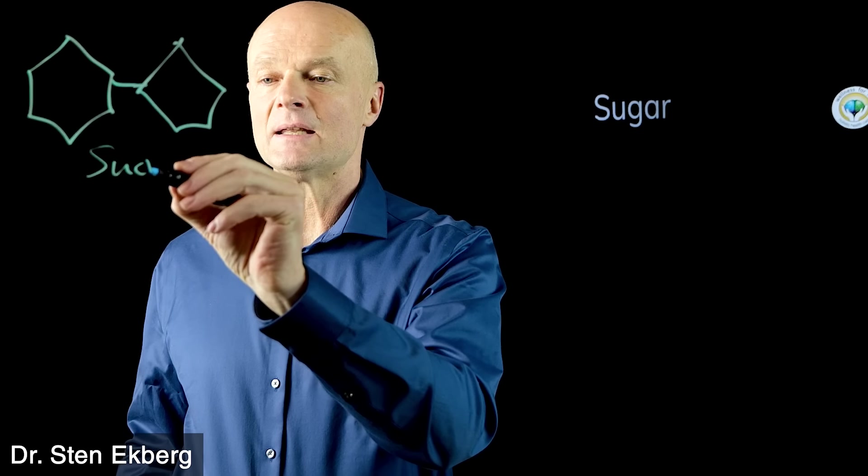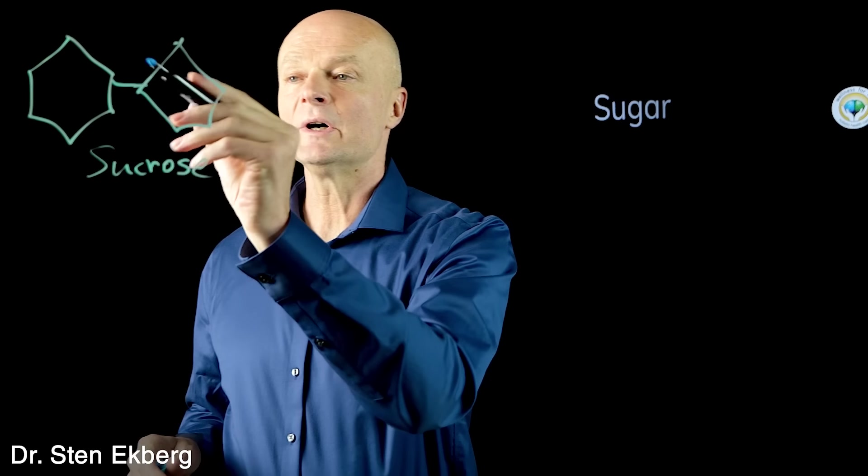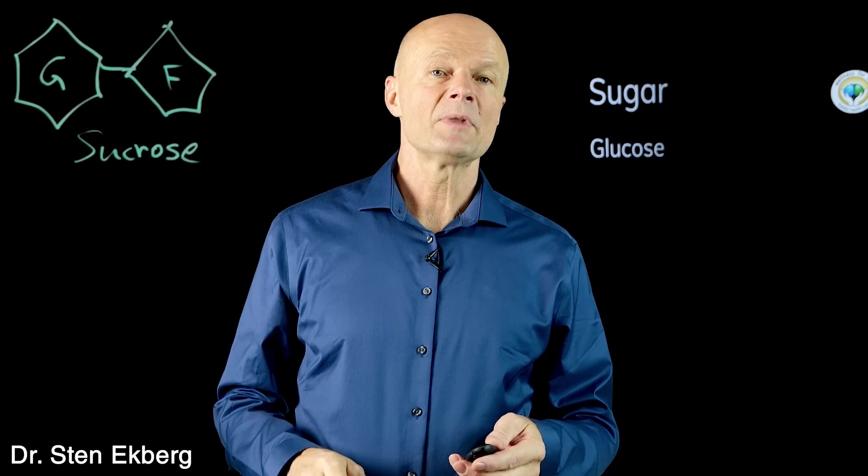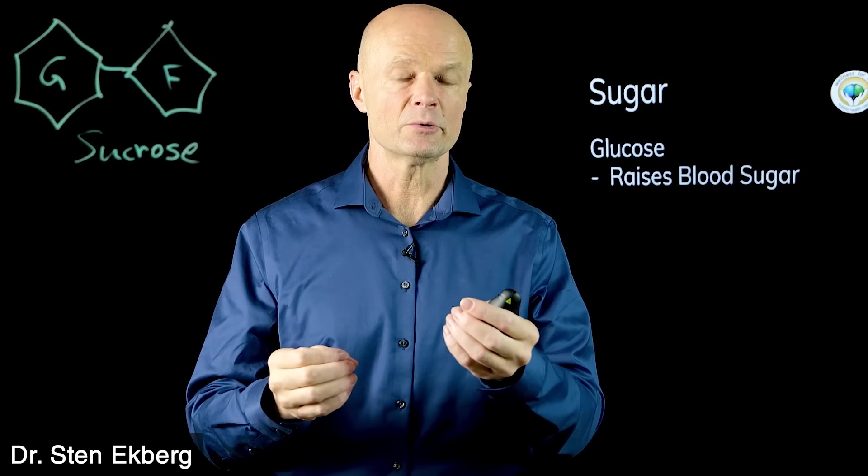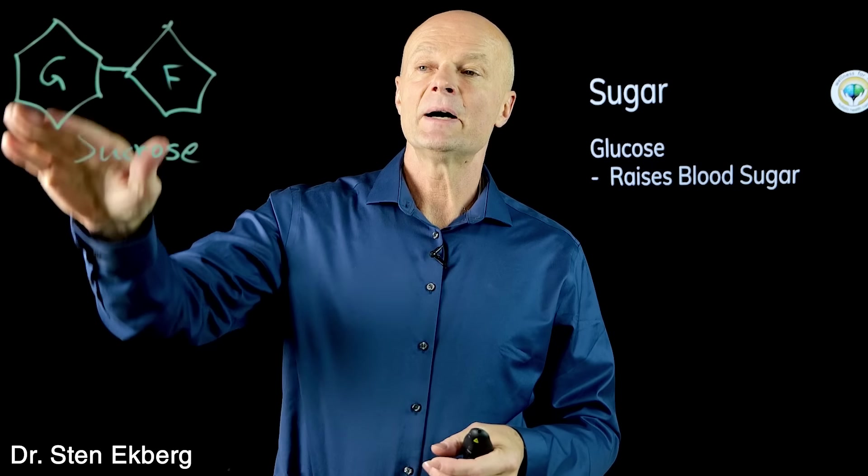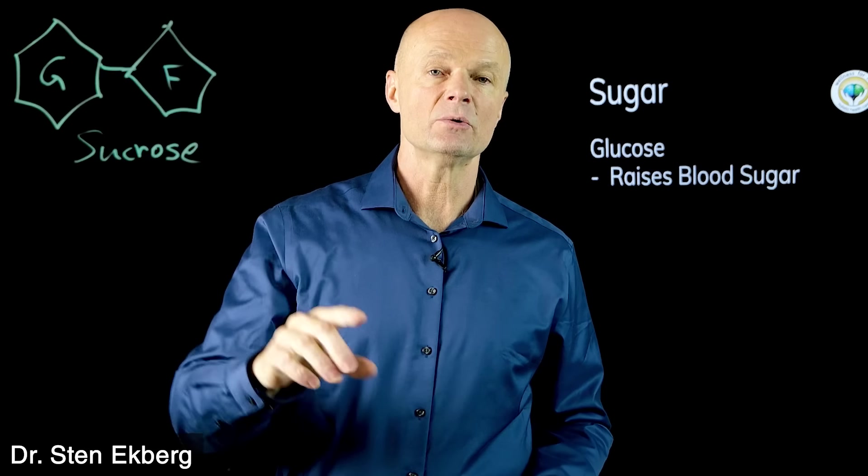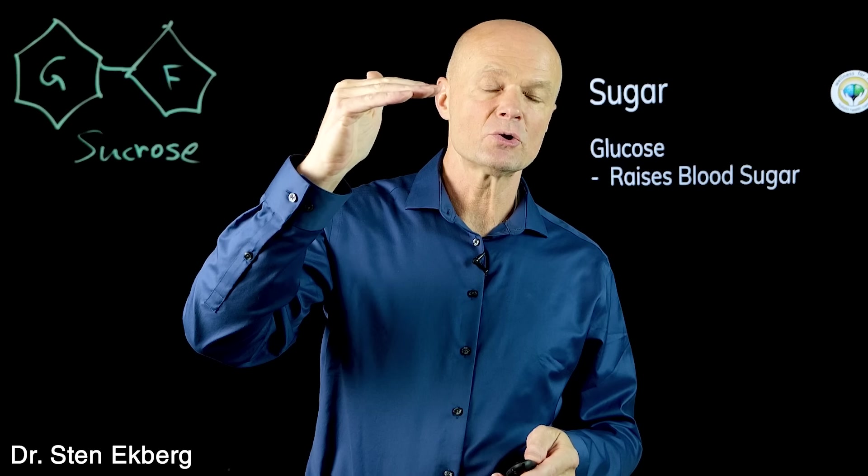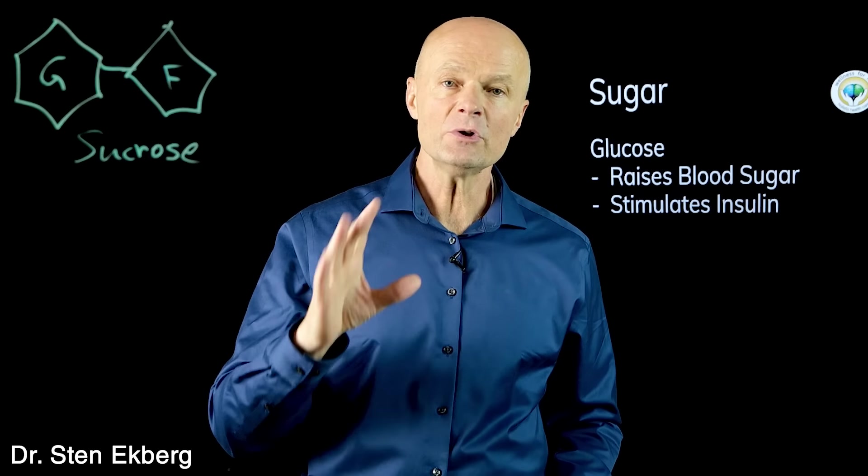Once we eat this and split it up, we get two monosaccharides - one glucose and one fructose. The glucose portion is what raises blood sugar. When we talk about blood sugar we're talking blood glucose. Fructose is a sugar too, but when we mention table sugar or added sugar in food, it's sucrose, a combination of the two. Glucose raises blood sugar and stimulates insulin because when blood sugar goes up we need to get that into the cell, and that's the job of insulin.